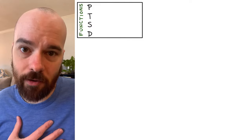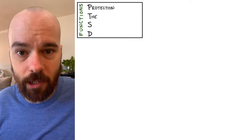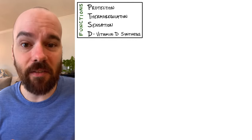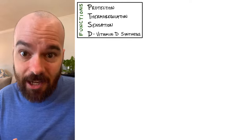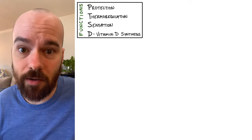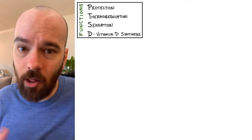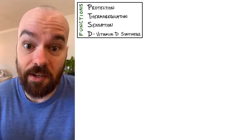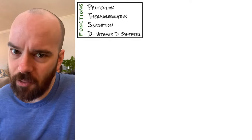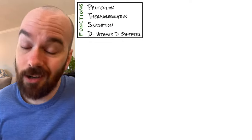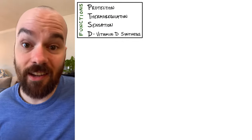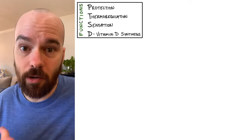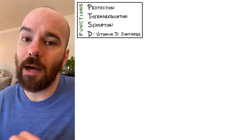I use the acronym PTSD to help me remember those: protection, thermoregulation, sensation, and D for vitamin D synthesis. Let's start with that last one — vitamin D synthesis. Our skin needs sunlight in order to make vitamin D from its component parts. There's no other molecule our bodies make where we need sunlight — that's really rare for humans or mammals. The other three functions — protection, thermoregulation, and sensation — are going to pop up throughout the rest of the video.